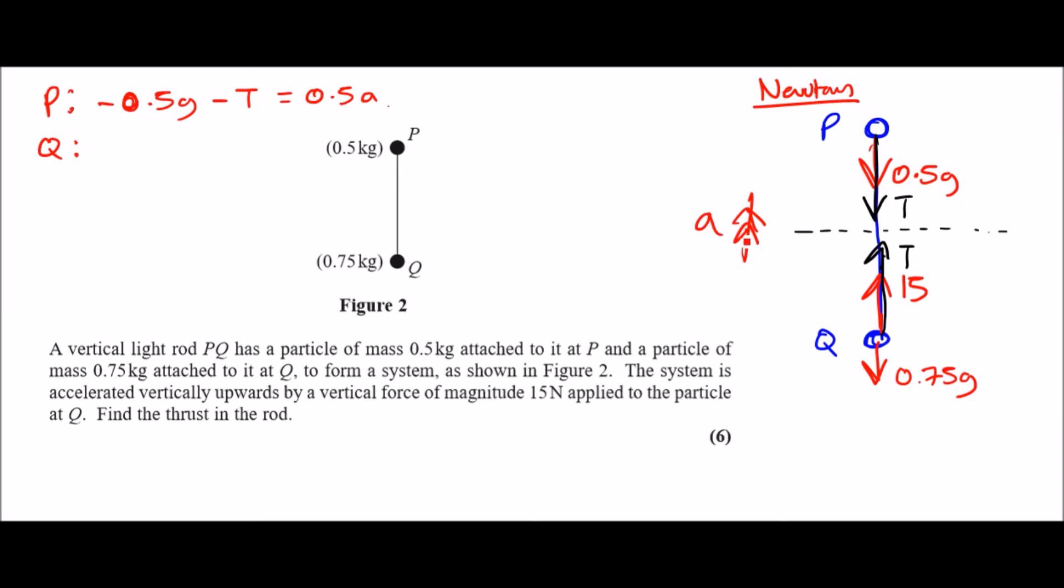Now at Q same thing applies. So Q has got two positive values. We've got 15 plus T. So the point is we're going to probably use simultaneous equations to find the values of a then eventually T. And yeah, this is going to equal 0.75a. And that's it guys. So this is where we are right now.